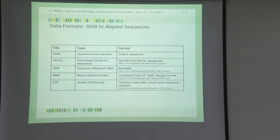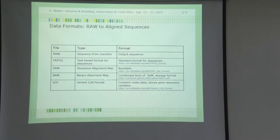Then we talk briefly about SAM — Sequence Alignment and Map. This is human-readable information which contains sequence but also quality information and, preferably if possible, also some mapping information. This is large, so you condense it into a BAM — Binary Alignment Map. It's short and storable but you can't read it directly, so you have to use SAM tools to be able to read it.